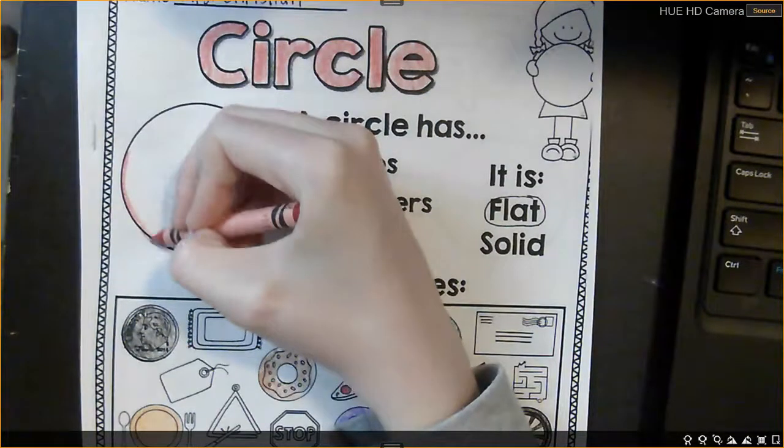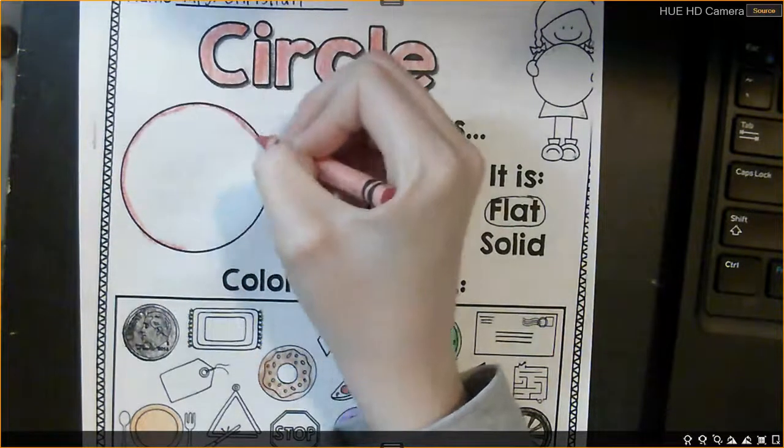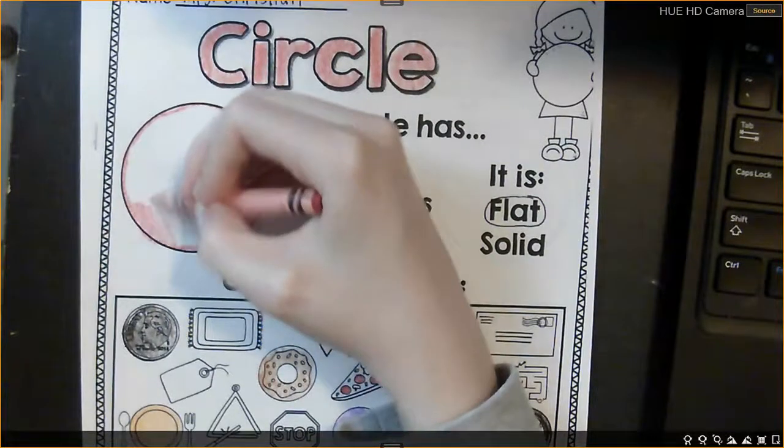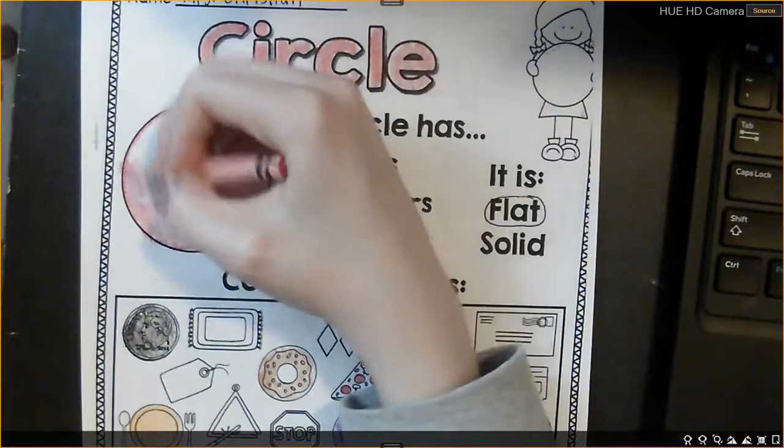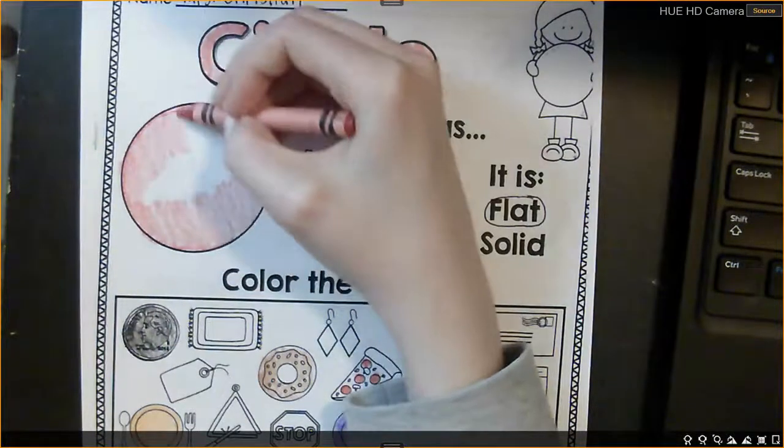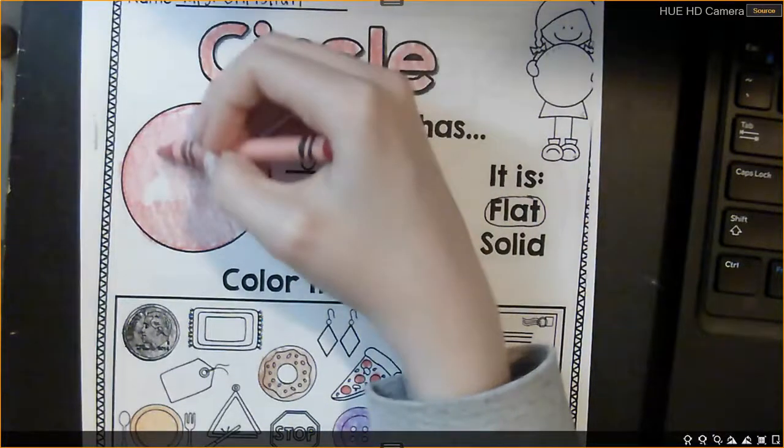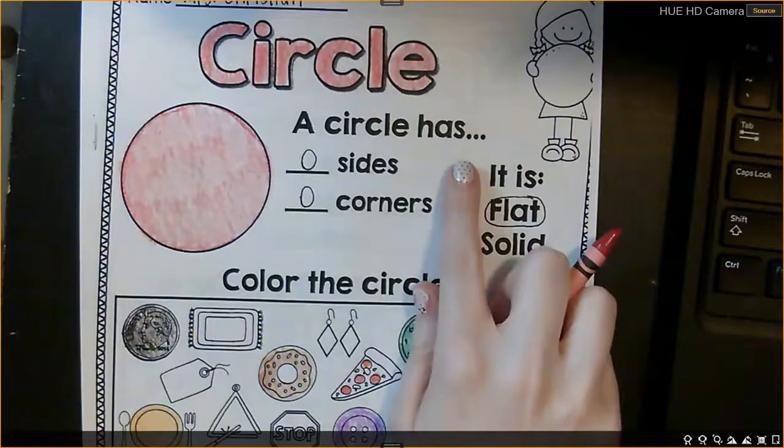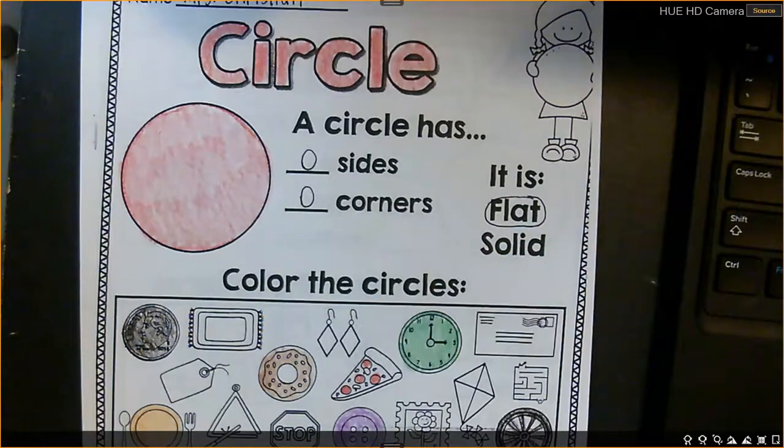Now, let's color our circle. Okay, and a circle has zero sides and zero corners. And this is a 2D shape.